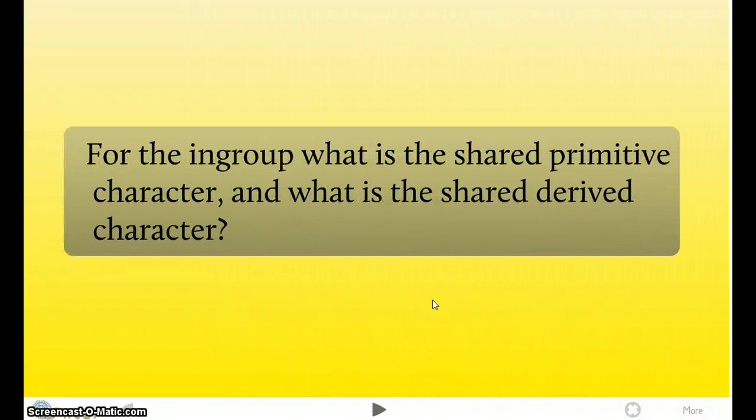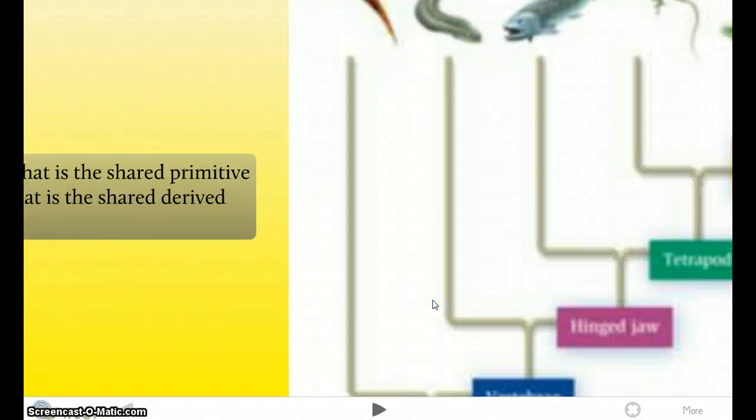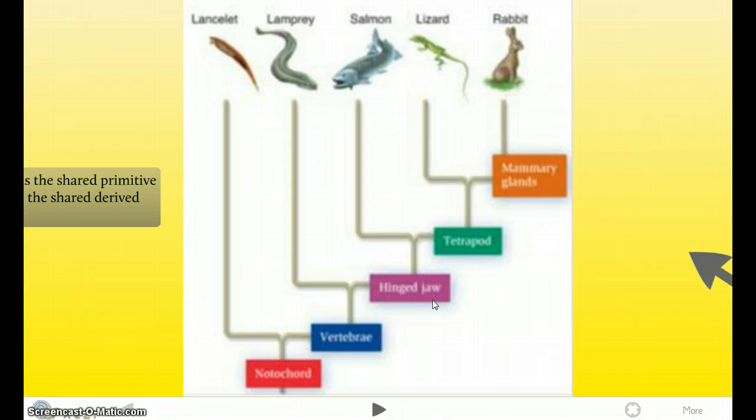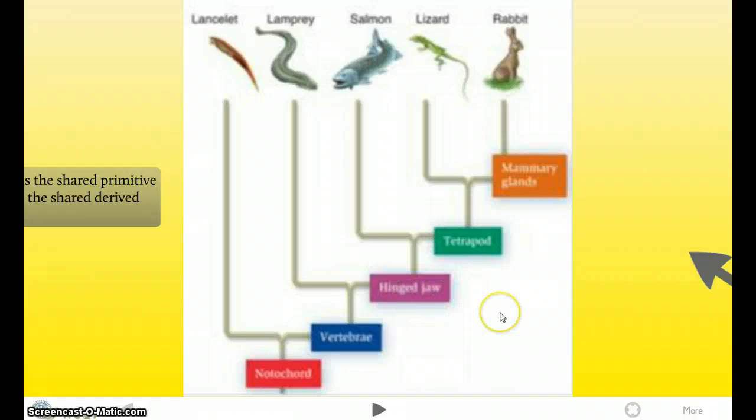Next question. For the In-Group, what is the Shared Primitive Character and what is the Shared Derived Character? Well, as we just went over, the Shared Derived Character is easy, that's what makes them the In-Group, that would be the Hinge-Jaw. Well, the Shared Primitive Character would be the Notochord and the Vertebrae, because these two characteristics came from the Lancelot and the Lamprey, which is their older ancestors.